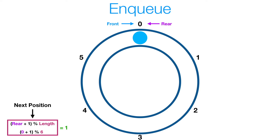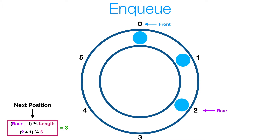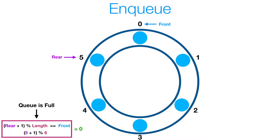Now let's take a look at some enqueue operations. If you want to enqueue an element, our next position is going to be 1 % 6, or at index 1. Then our next position is 2 % 6, or index 2. And our next position is 3 % 6, or index 3, and so on. Now at the point where our index is 5, since we're enqueuing in a clockwise direction, at the point where rear plus 1 is going to equal our front index, then we know we have a full queue.